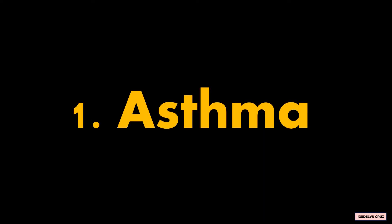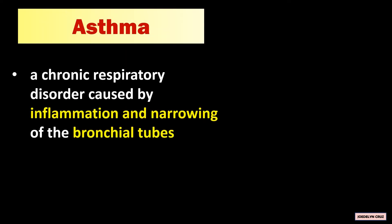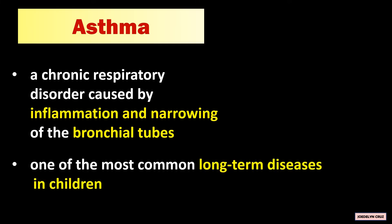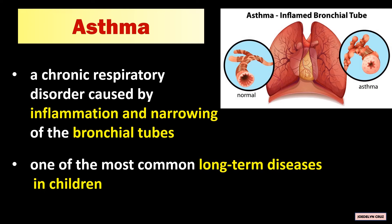Asthma is a chronic respiratory disorder caused by inflammation and narrowing of the bronchial tubes. It is one of the most common long-term diseases in children. In this picture, this is the normal bronchial tube that is not inflamed, while this is the bronchial tube with asthma — it is swollen and narrow.